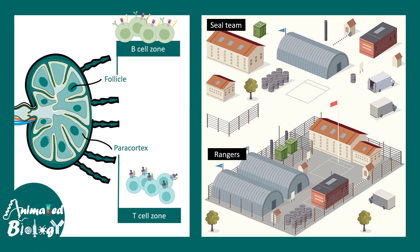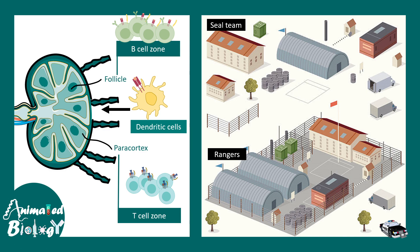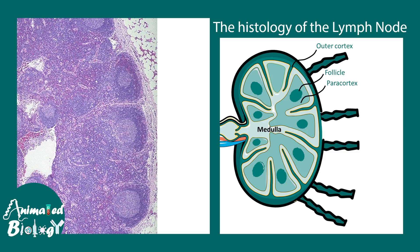Imagine a situation where a police officer approaches this temporary army base camp to give news of a possible invasion by a terrorist. This police officer is equivalent to the dendritic cell. The dendritic cell enters the lymph node through the afferent lymphatics and interacts with the T cells to activate them. Once the dendritic cell is in, it would interact with many cell types.